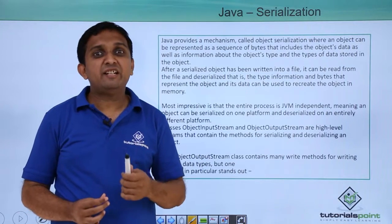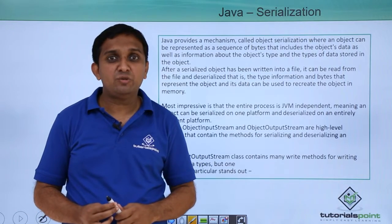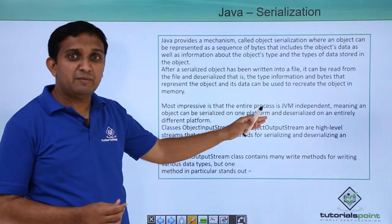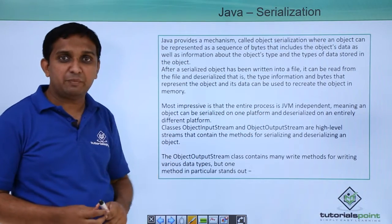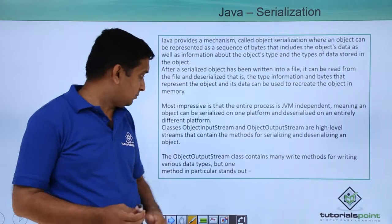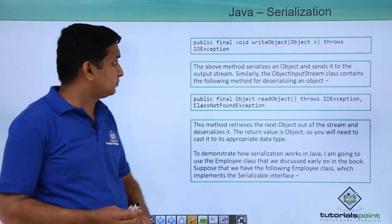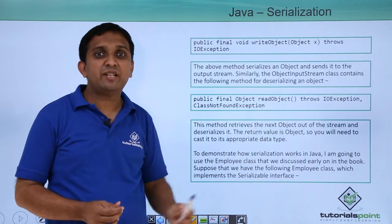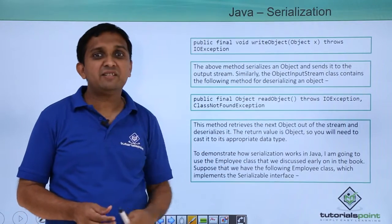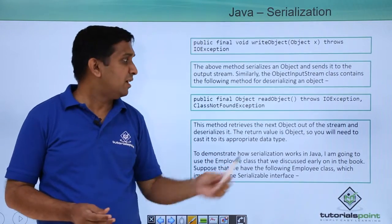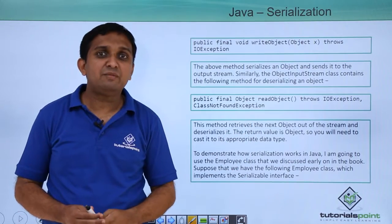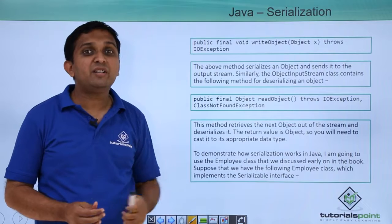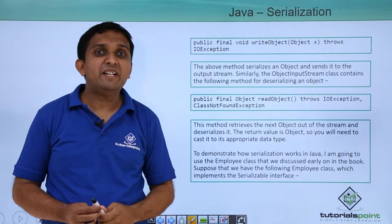For Serialization and Deserialization, the classes which are used are ObjectOutputStream and ObjectInputStream. There are two methods: one is the writeObject method, the other is the readObject method. writeObject is inside ObjectOutputStream, and readObject is inside ObjectInputStream. writeObject is used to write the object into the file, and readObject is used to read the bytes from the file.